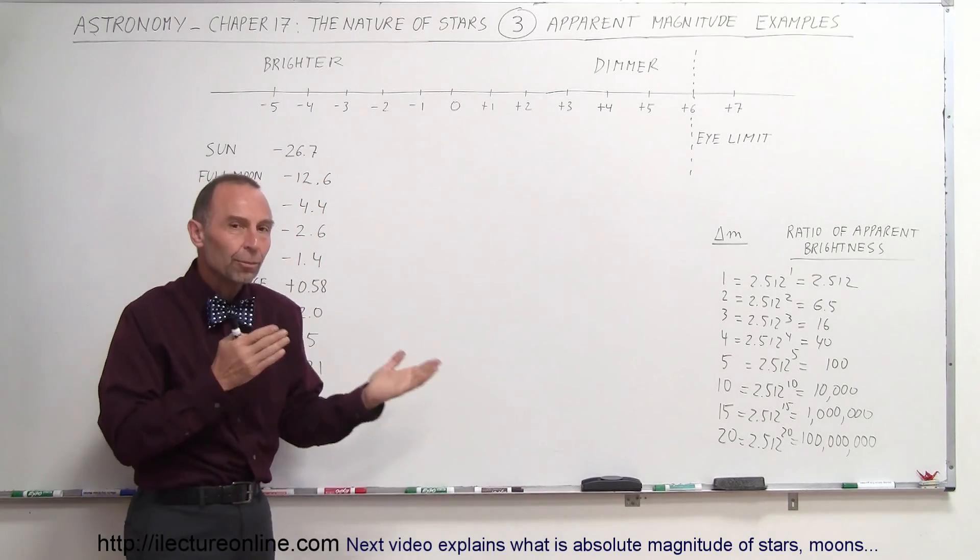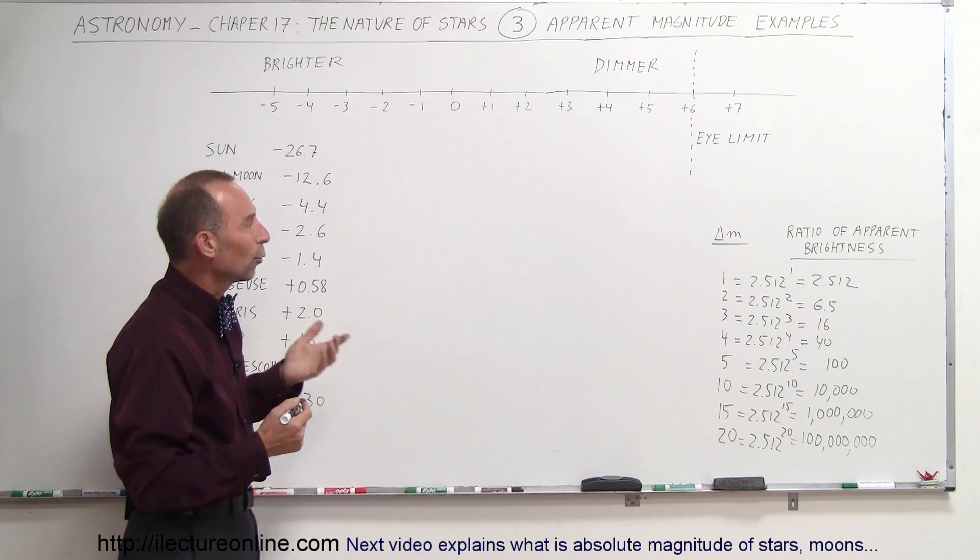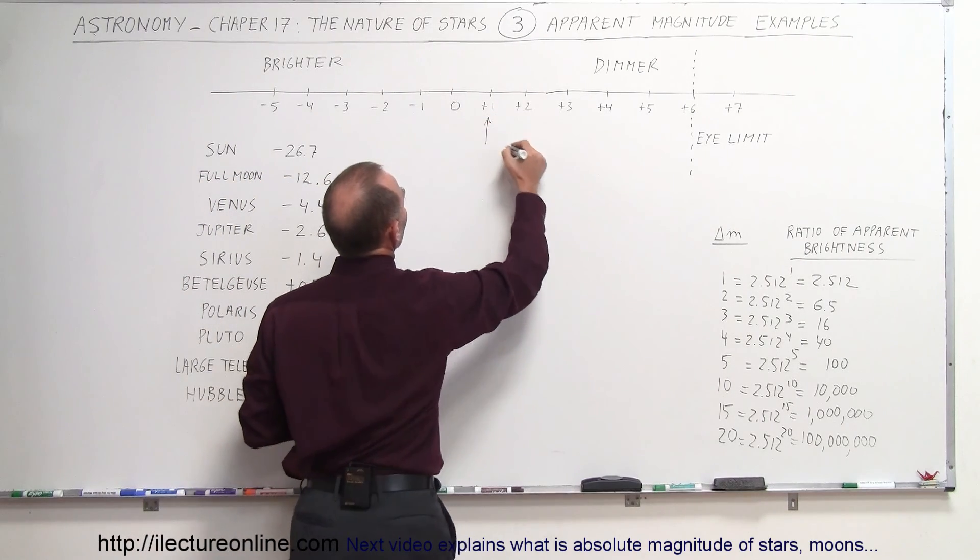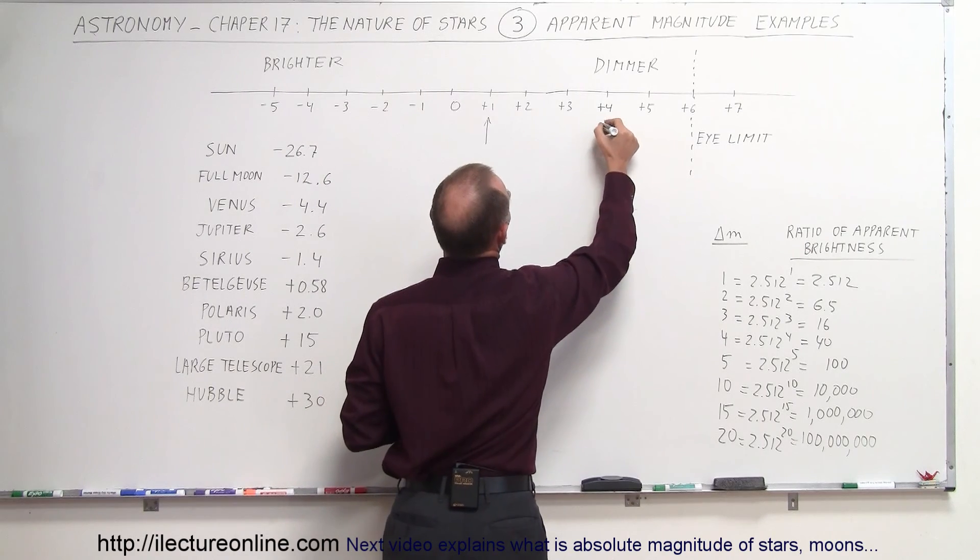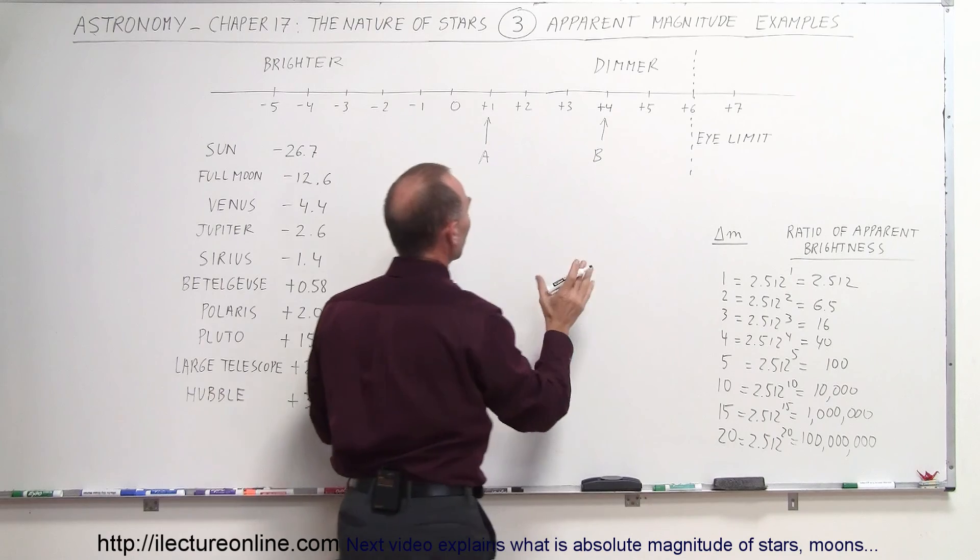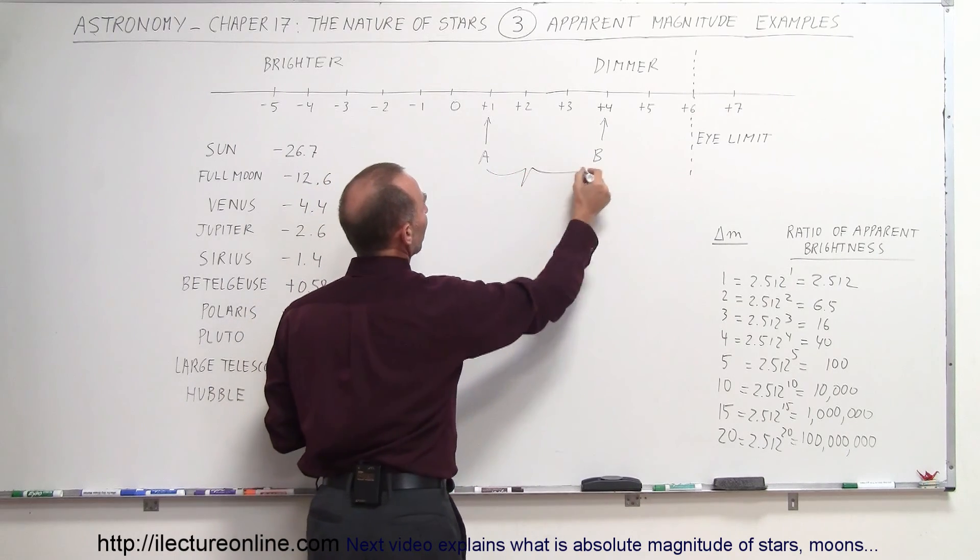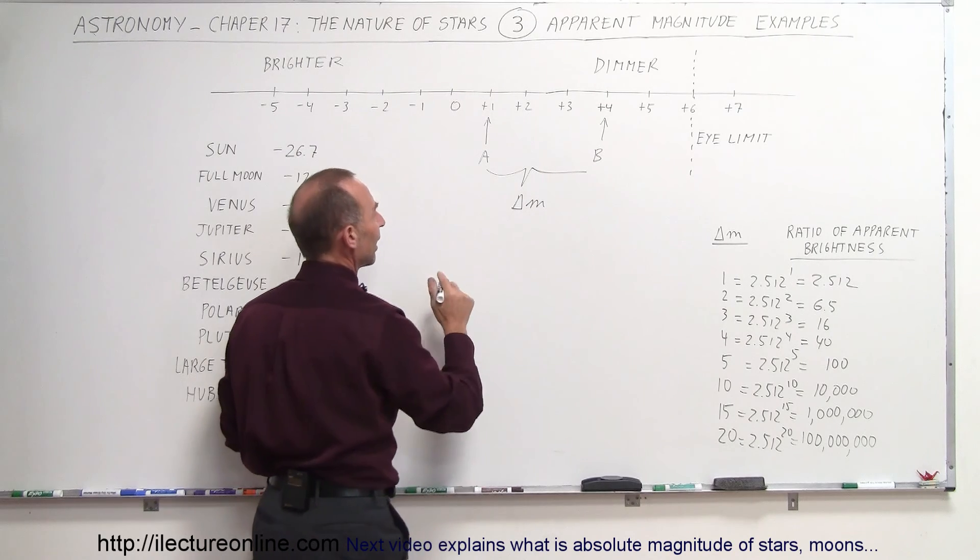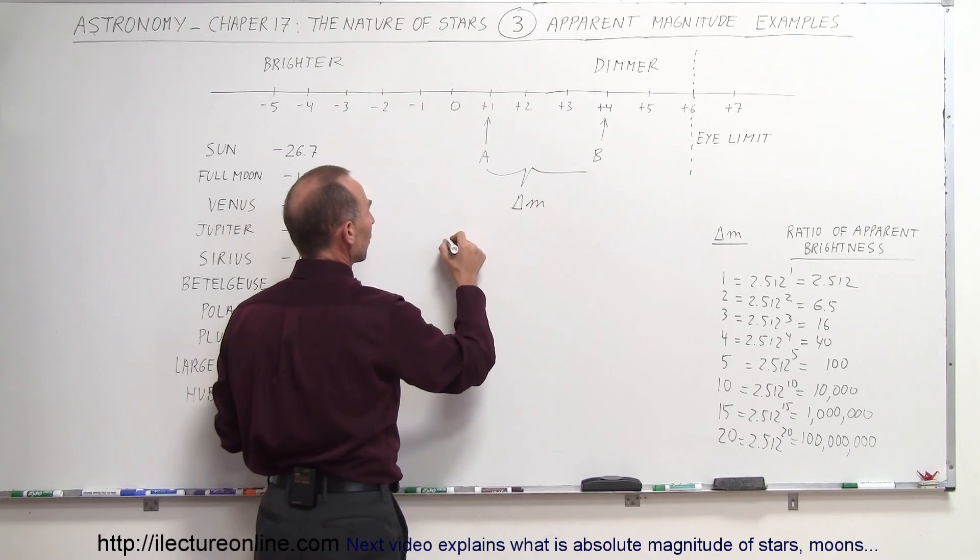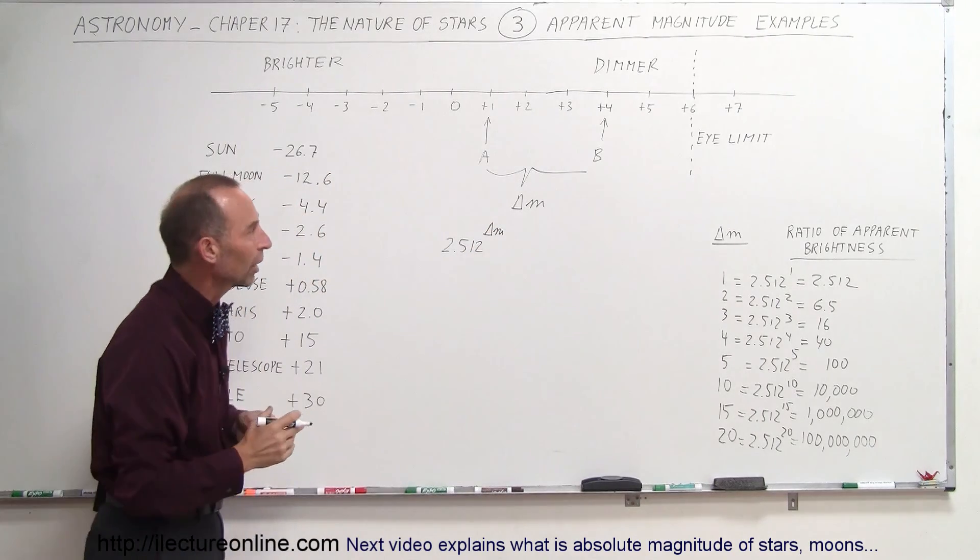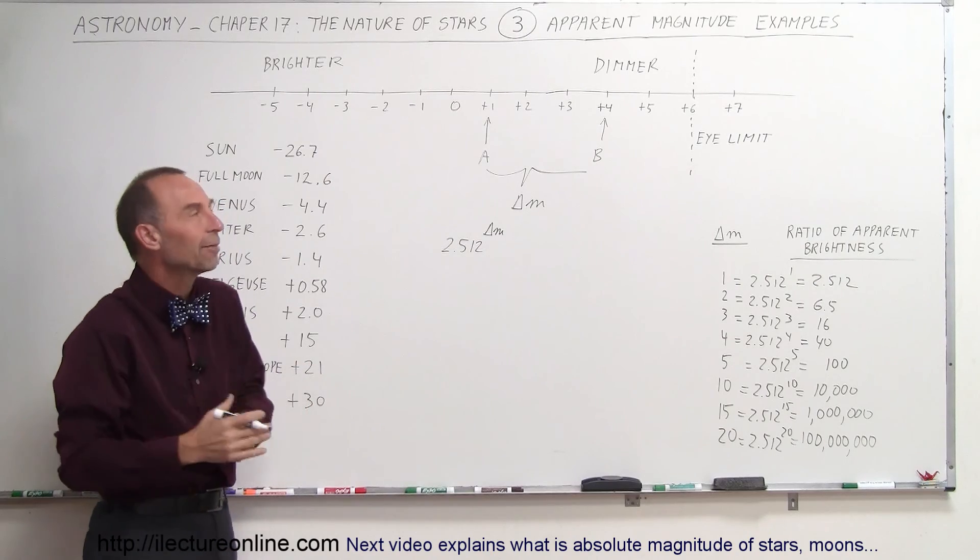To compare the brightness of things, let's say you want to compare a star that has magnitude plus one to a star that has magnitude plus four. Let's call this star A, let's call this star B. You need to find the difference in the magnitudes, the delta m. The difference in brightness can be defined by taking the number 2.512 and raising it to the difference in magnitudes.